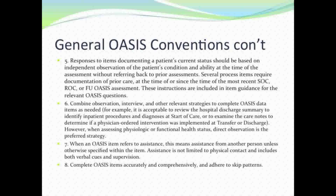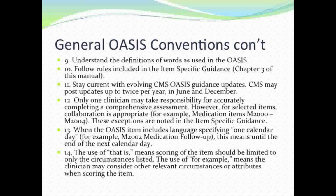Convention six: combine observation, interview, and other relevant strategies to complete OASIS data items. For example, it is acceptable to review hospital discharge summaries; however, when assessing physiologic or functional health status, direct observation is the preferred strategy. Convention seven: when an OASIS item refers to assistance, this means assistance from another person and is not limited to physical contact — it also includes verbal cues and supervision. Convention eight: complete OASIS items accurately and comprehensively and adhere to skip patterns. Convention eleven: stay current with evolving CMS OASIS guidance updates, posted up to twice per year in June and December.